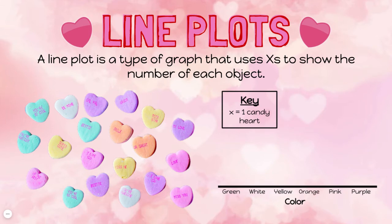And finally, line plots are a type of graph that uses X's to show the number of each object. I have a line along the bottom labeled with the different colors: green, white, yellow, orange, pink, and purple. A line plot is always going to have a key, and this key tells me that one X equals one candy heart. But you always have to pay attention to the key because sometimes an X could be worth two candy hearts or even ten candy hearts, and that makes a big difference when you're analyzing this graph.